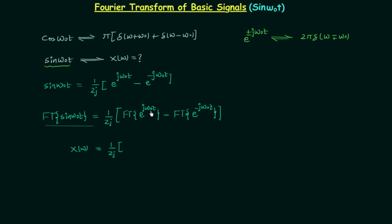The Fourier transform of e^(jω₀t) is equal to 2π δ(ω − ω₀), and the Fourier transform of e^(−jω₀t) is equal to 2π δ(ω + ω₀).